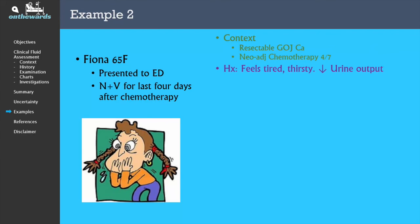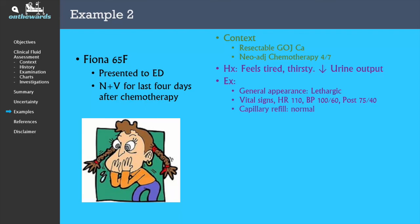When you see Fiona, she reports feeling thirsty and tired. She hasn't been able to keep anything down despite taking her antiemetics, and she also reports that she isn't passing much urine. On examination, she appears lethargic lying in bed. Her vital signs reveal that she is tachycardic with a postural drop of 25 mmHg. She has normal capillary refill and dry mucous membranes.